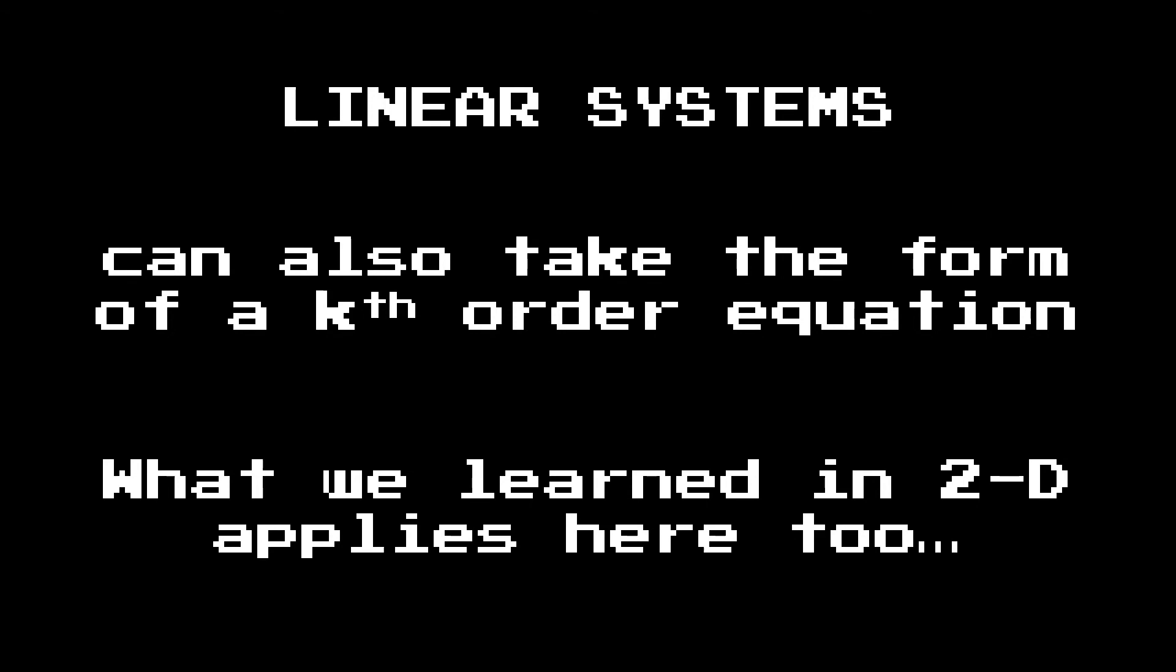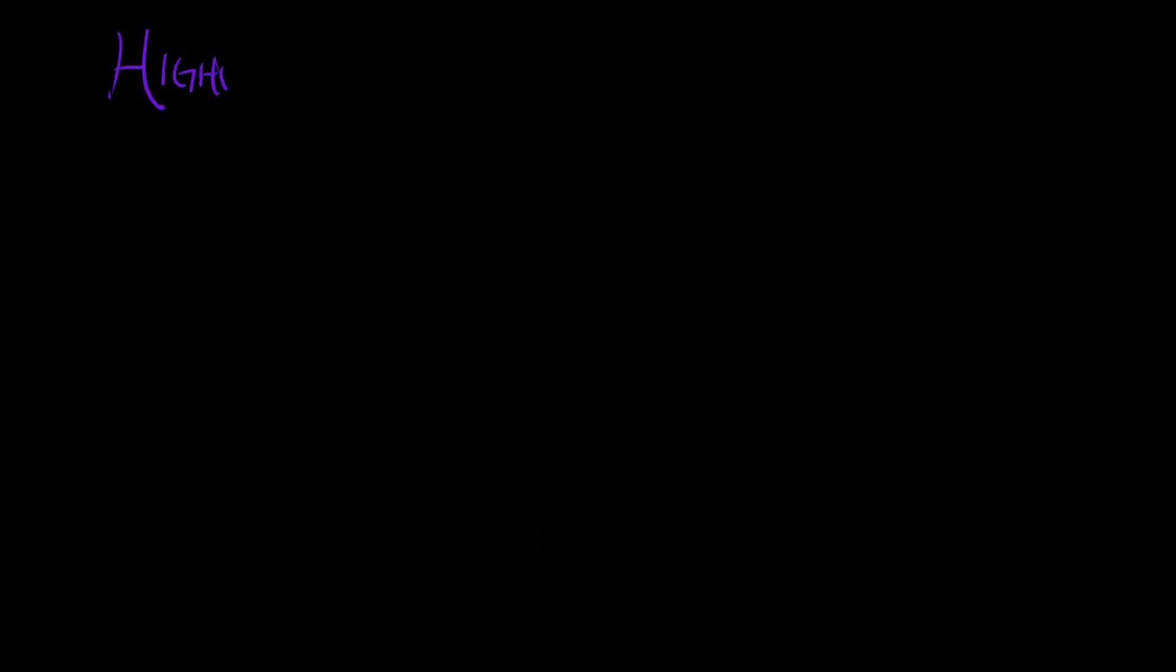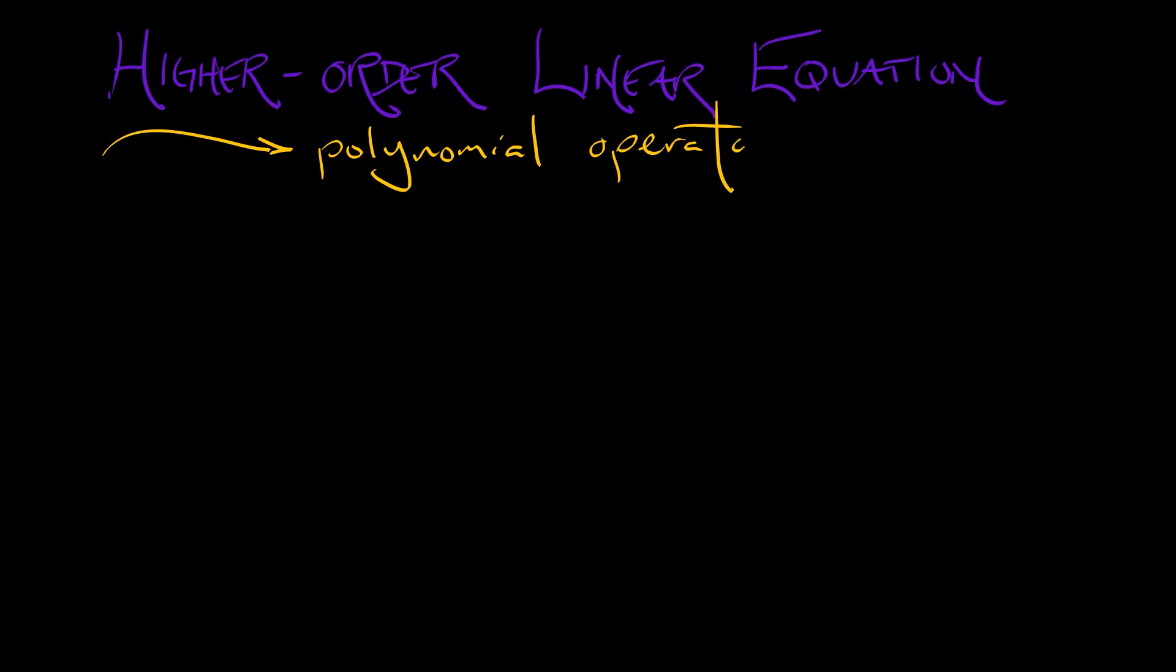We have to update things a little bit. A higher order linear equation is really a polynomial operator in one of our two evolution operators, either d in continuous time or e in discrete time.